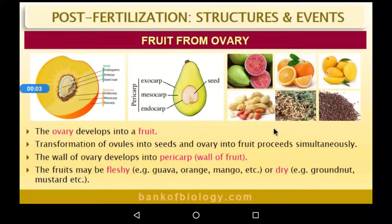Hi students. In the previous videos we discussed about the post fertilization events — endosperm development, embryo development, and how seeds are formed from the ovule. So today we are going to discuss about how fruits are formed from the ovary. We all know that the ripened ovary after fertilization is the fruit.